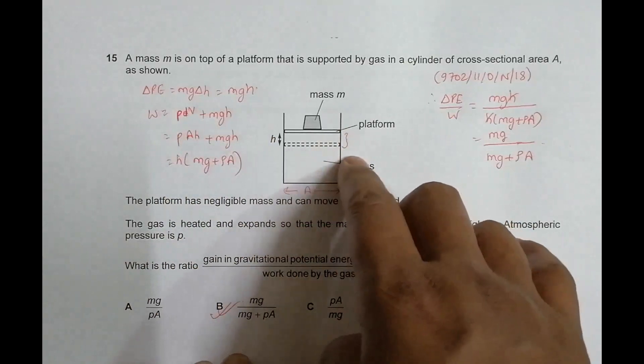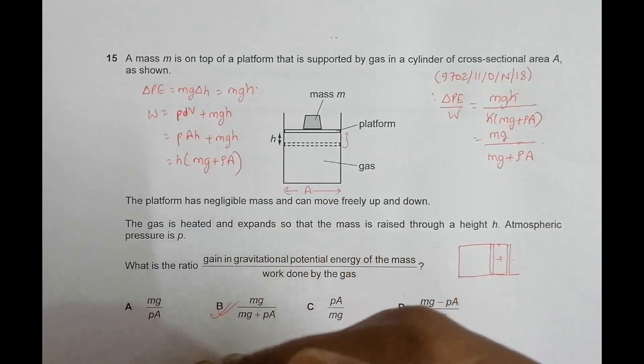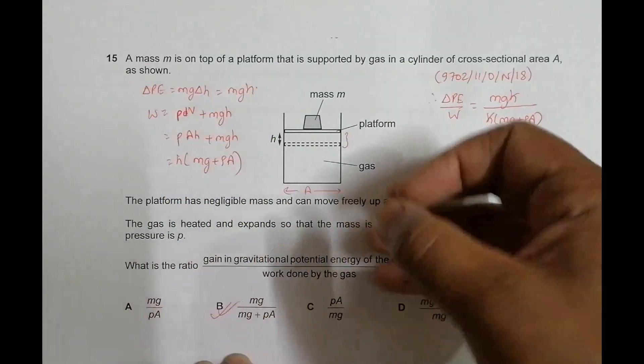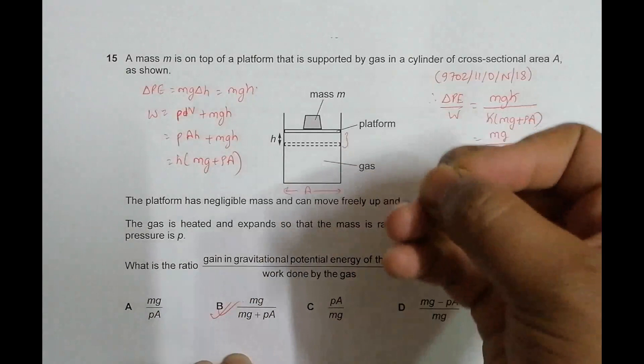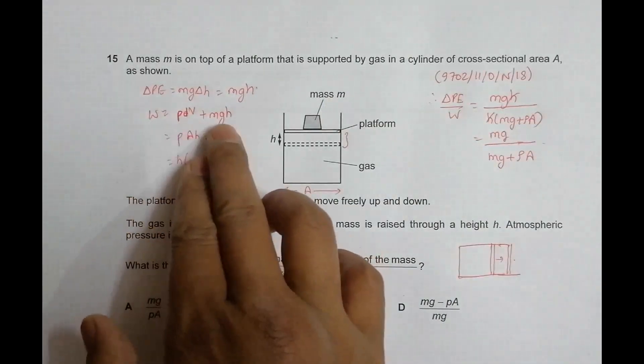It requires extra work for that purpose. So P dV is there, but it requires more work than P dV to be able to raise that mass. That's why there is P dV plus mgh.